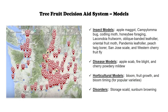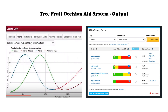The tree fruit decision aid system runs lots of insect, disease, and horticultural models. These models use site-specific weather data to predict when the crop or pest will reach important developmental benchmarks or when conditions will support disease development. This works very well because many developmental stages in the life of plants and pests are predictable based on temperature and other environmental factors. The models can even anticipate future status of the crop or pests by incorporating weather forecasts and historic weather data, essentially extending the model out into the future.